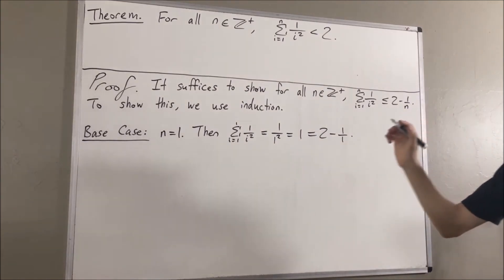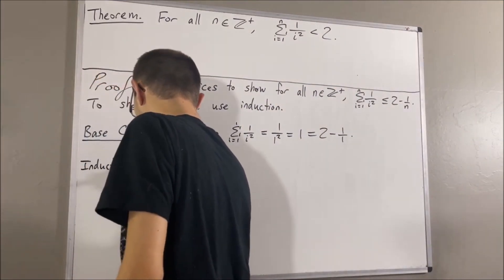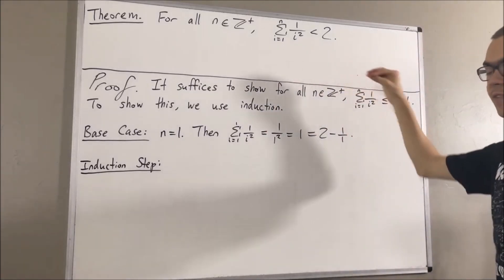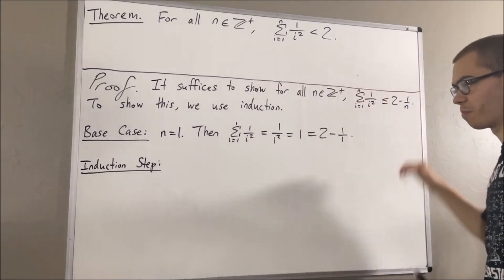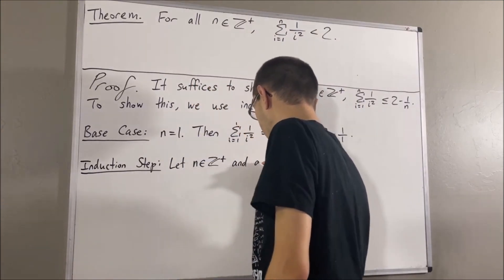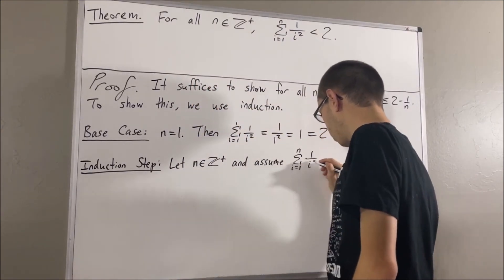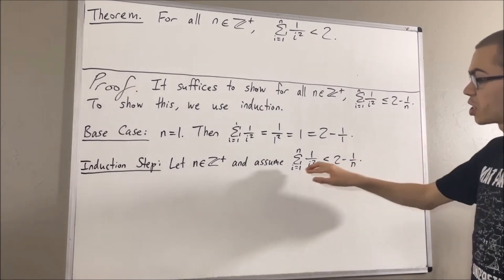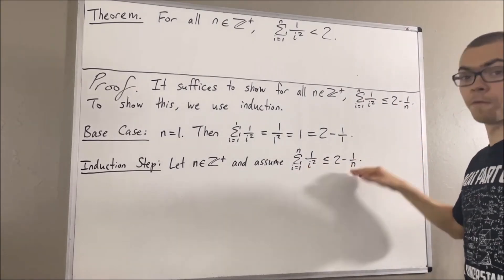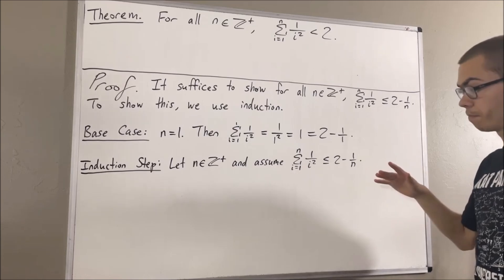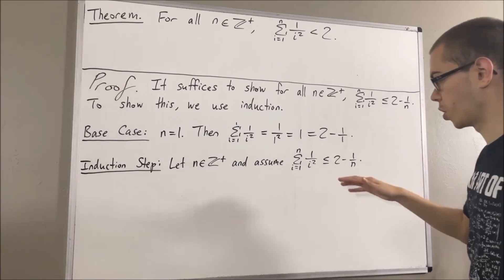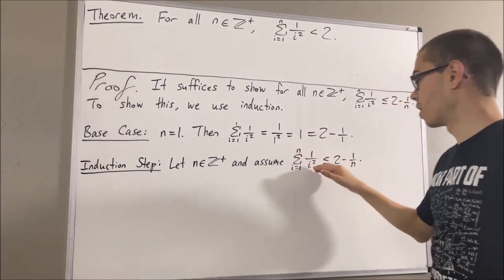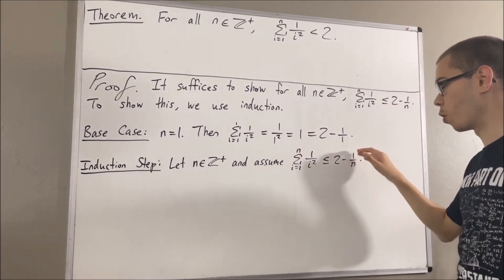Now let's move on to the induction step. In the induction step, we give ourselves an arbitrary positive integer n where this is true. The whole goal of the induction step is to show that this is also true for n plus 1. So really, we want to show that the sum from i equals 1 to n plus 1 of 1 over i squared is less than or equal to 2 minus 1 over n plus 1.